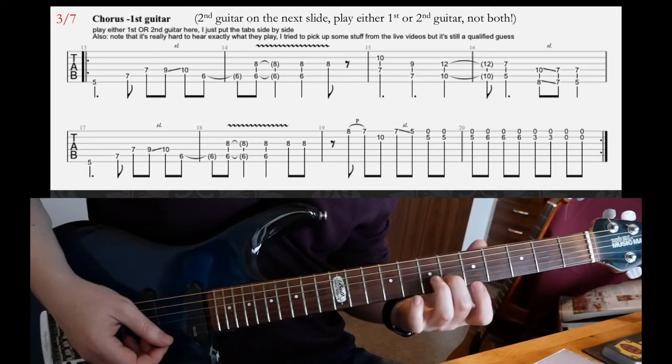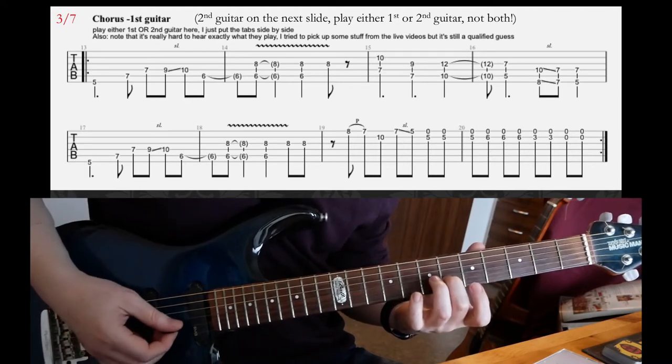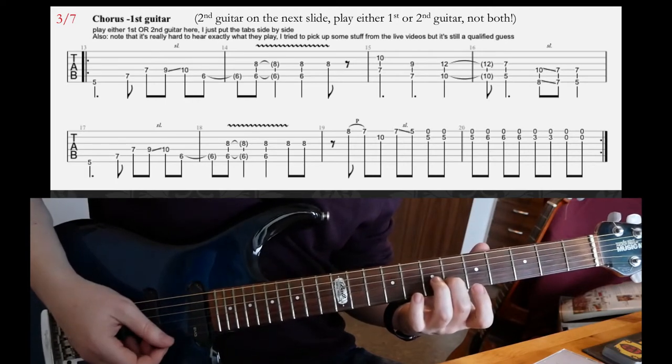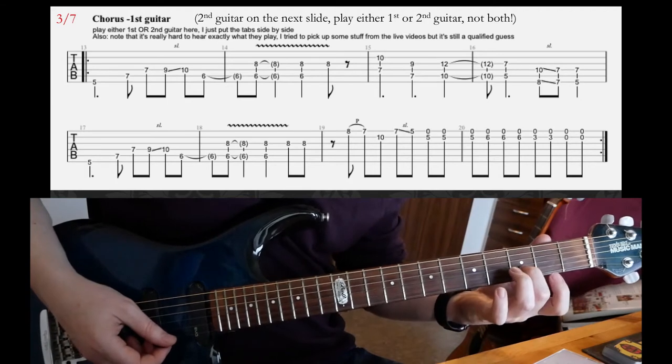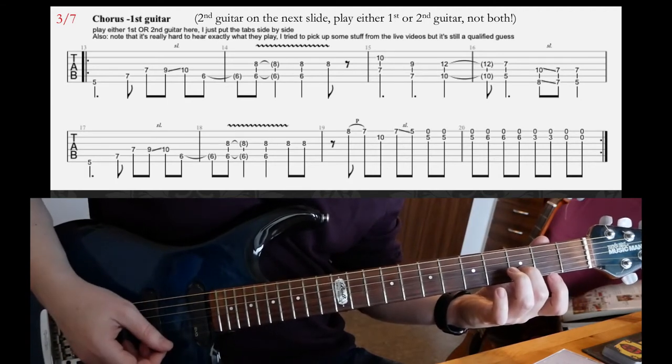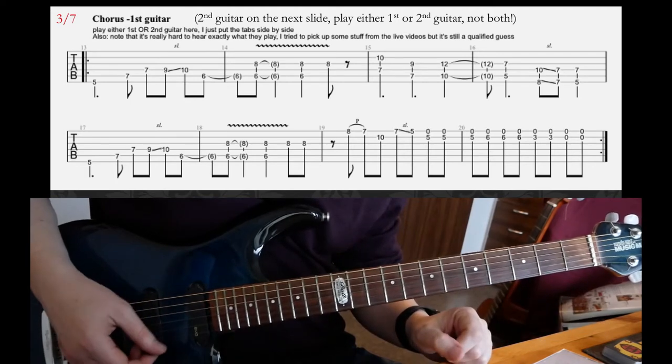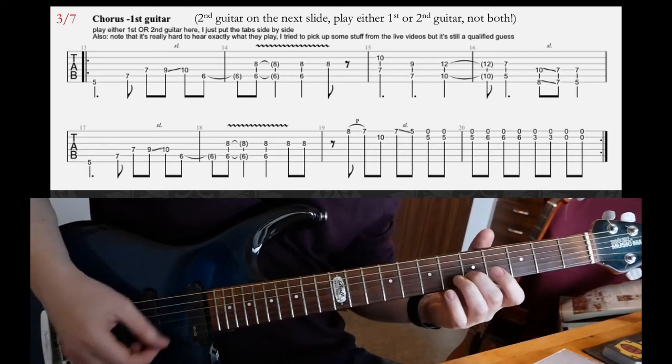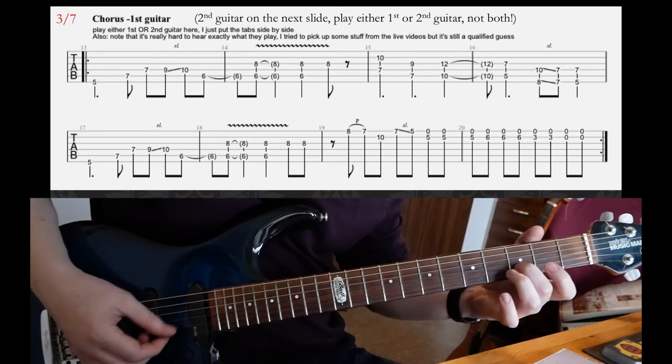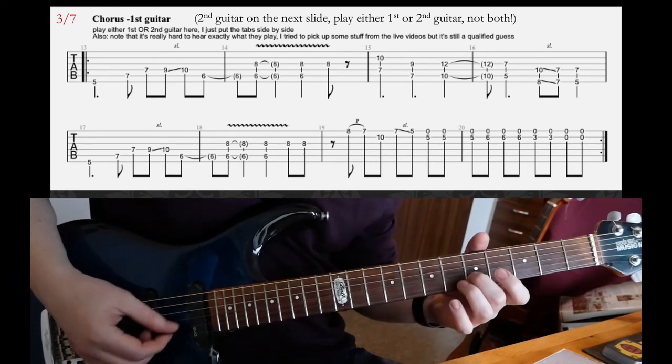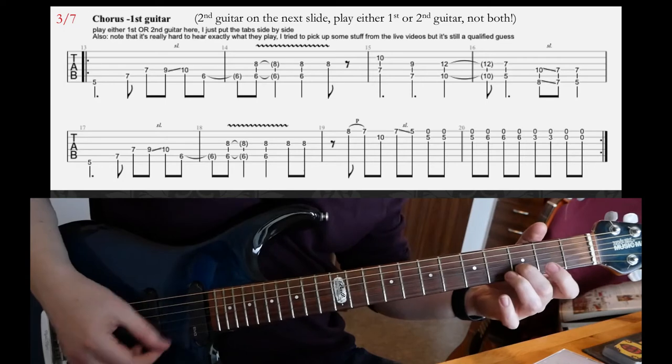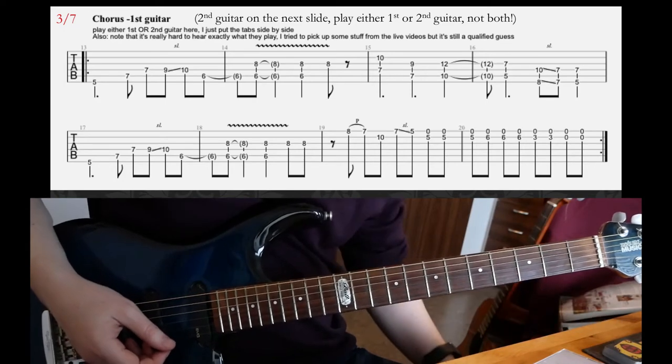3 times on that. Then move 1 fret higher up on the B string and 3 times. Then move down to 3rd fret on B and twice. Hit twice. And then hit twice on open B and E. So 1, 2, 3, 1, 2, 3, 1, 2, 1, 2.